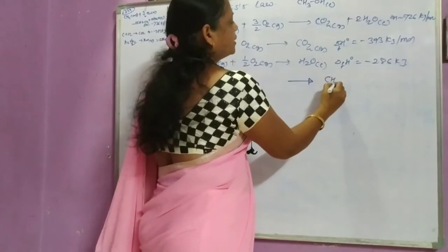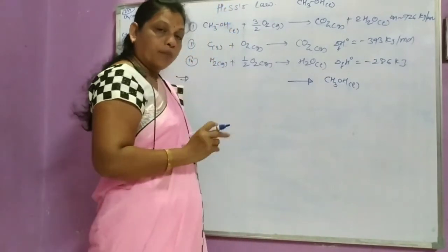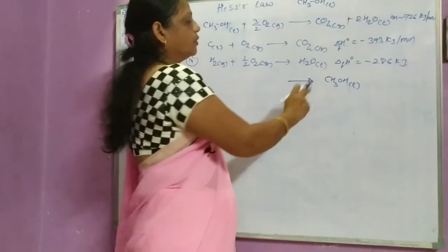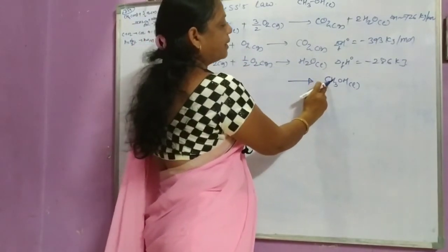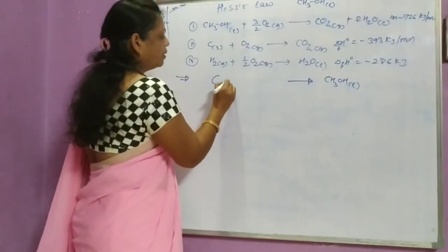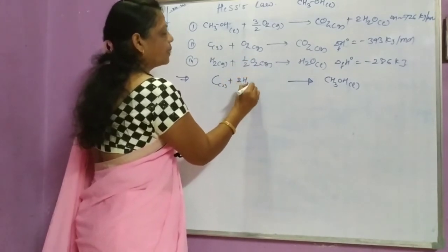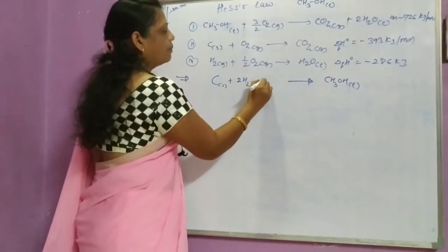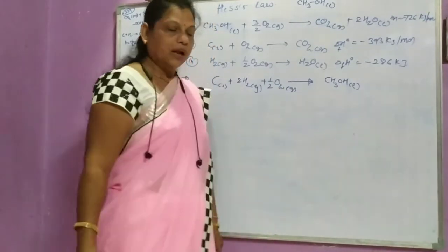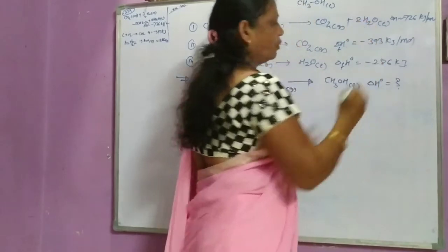Formation of methyl alcohol means one mole of methyl alcohol is formed from its elements in their standard state at constant temperature. The elements are carbon, four hydrogens, and one oxygen. So the required equation is: C solid plus twice H2 gas plus 1/2 O2 gas giving CH3OH liquid. Delta H for this required equation can be calculated.